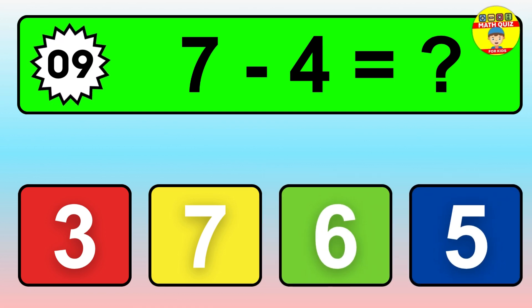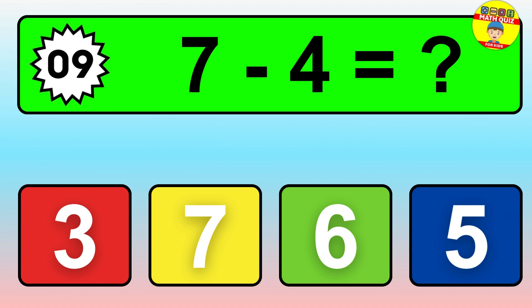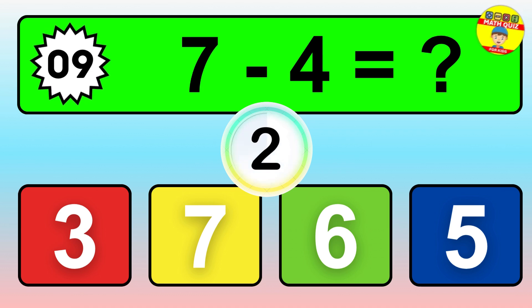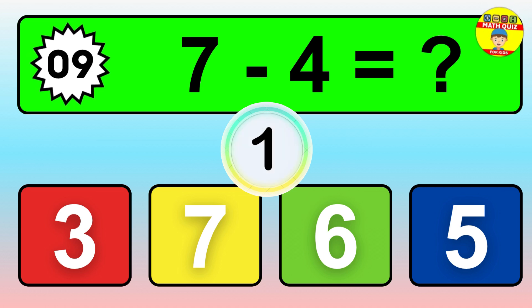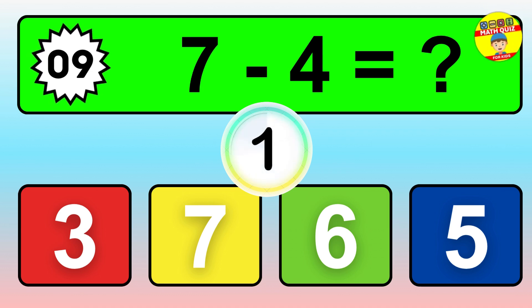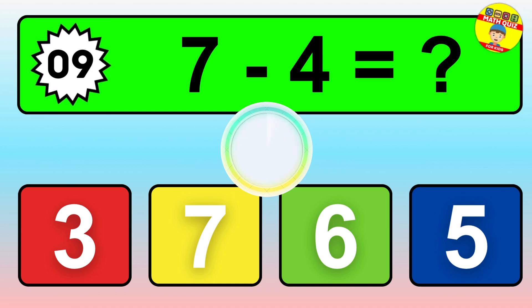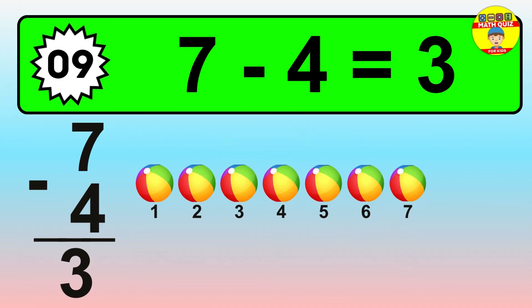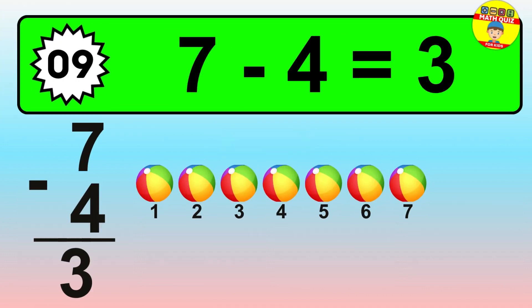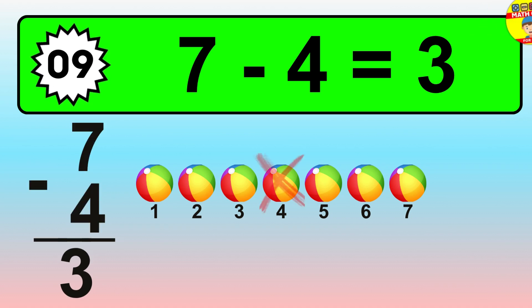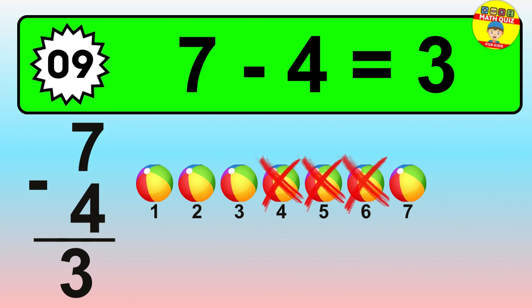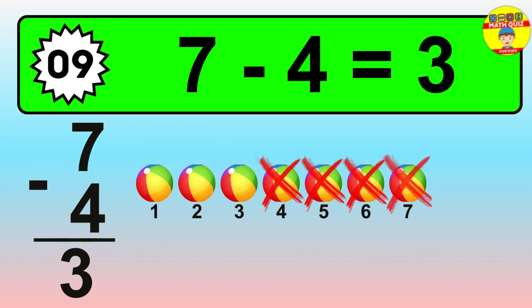Question nine: seven minus four equals what? So the answer is seven minus four is three. Let's count it: one, two, three.